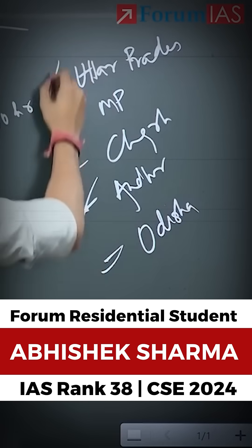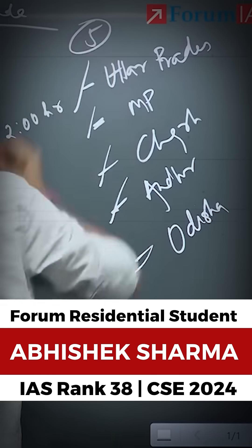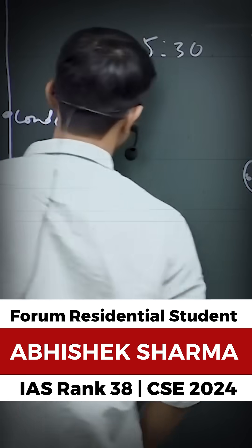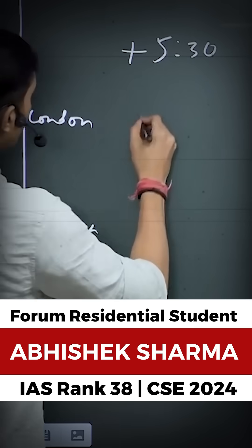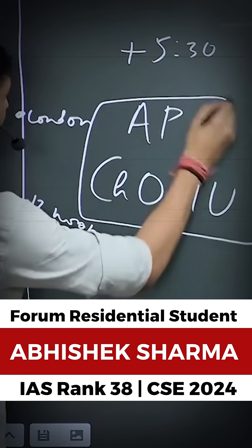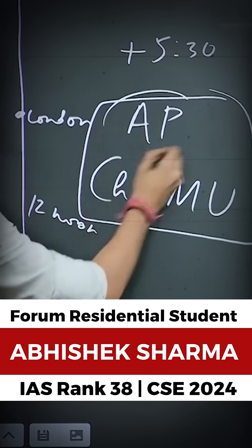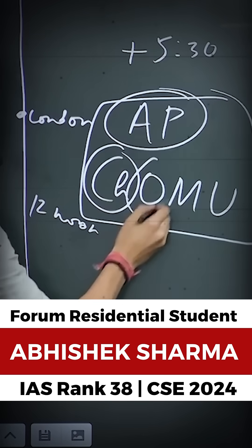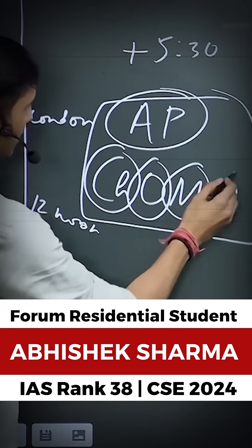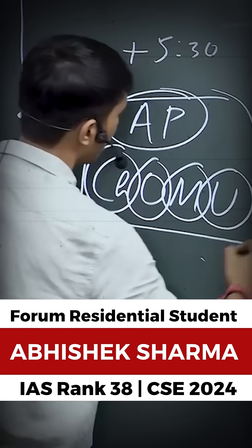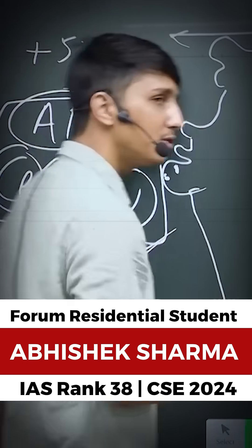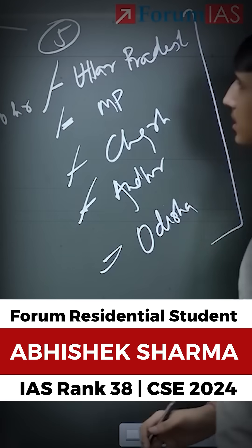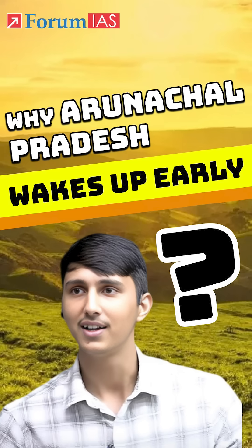You have to remember them — that India's standard meridian passes through these states. You can remember it using a mnemonic. This is Andhra Pradesh, this is Chhattisgarh, this is Odisha, Madhya Pradesh, Uttar Pradesh. You can remember it like this. This is another important question with respect to mapping.